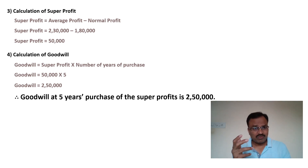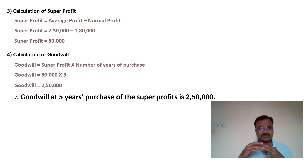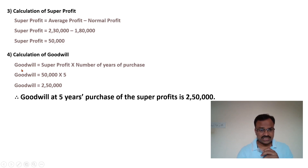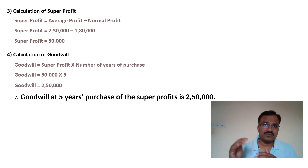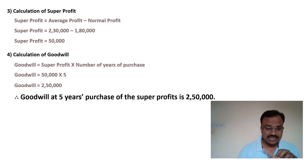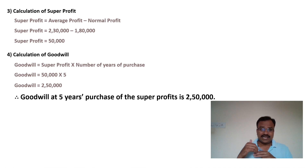Super profit is the difference between average profit and normal profit. We multiply the number of years of purchase by the super profit to get goodwill. The assumption in this method is that in the next five years the firm is going to continue earning the super profit of Rs. 50,000.